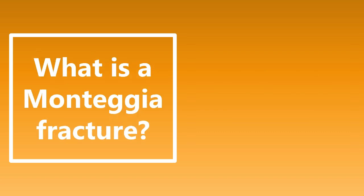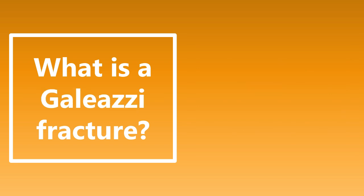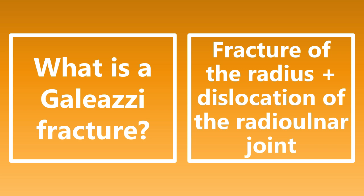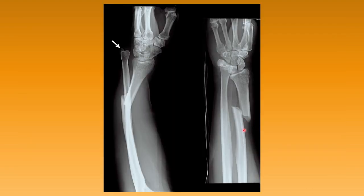What is a Monteggia fracture? This is a fracture of the proximal ulna as well as a subluxation of the radial head. What is a Galeazzi fracture? That is a fracture of the radius with dislocation of the radioulnar joint. Using the mugger mnemonic: M and U are next to each other, so Monteggia is a fracture of the ulna; G and R are next to each other, so Galeazzi is a fracture of the radius. Visual examples show the ulnar fracture with radial head dislocation, and the radial fracture with ulnar dislocation.